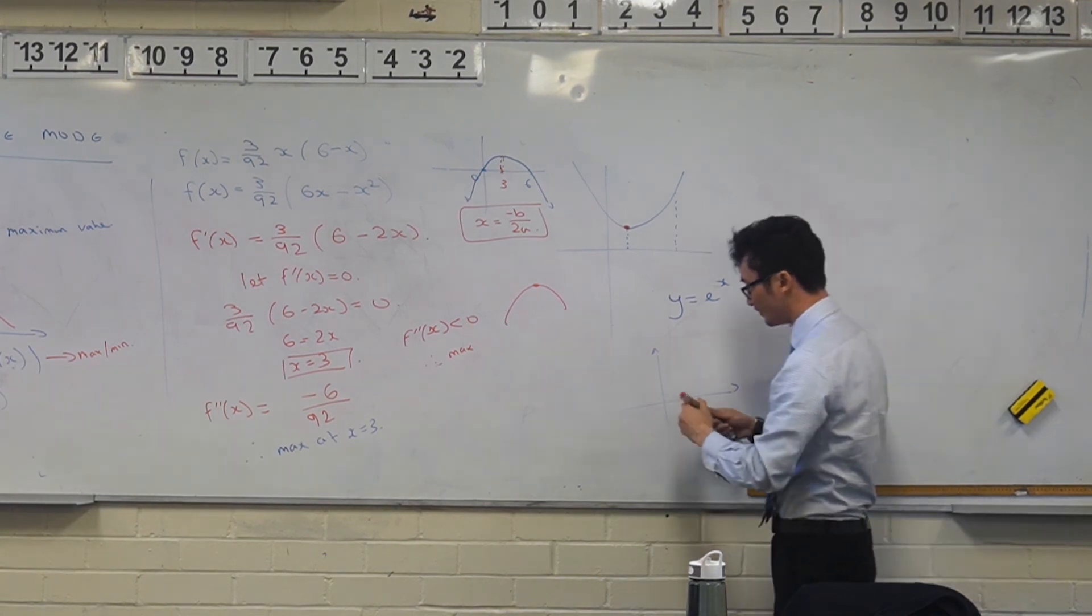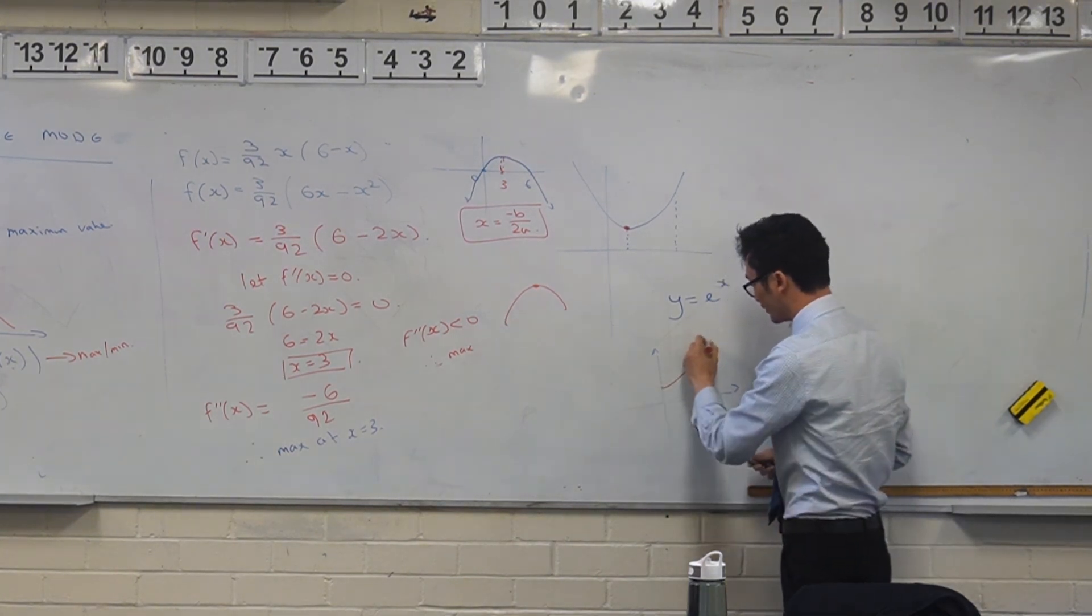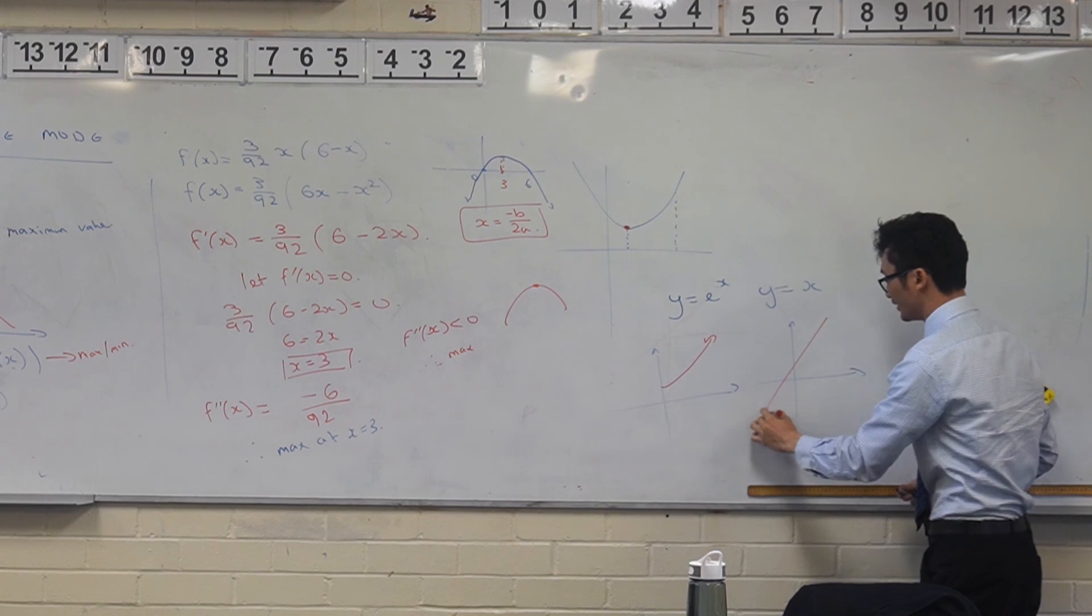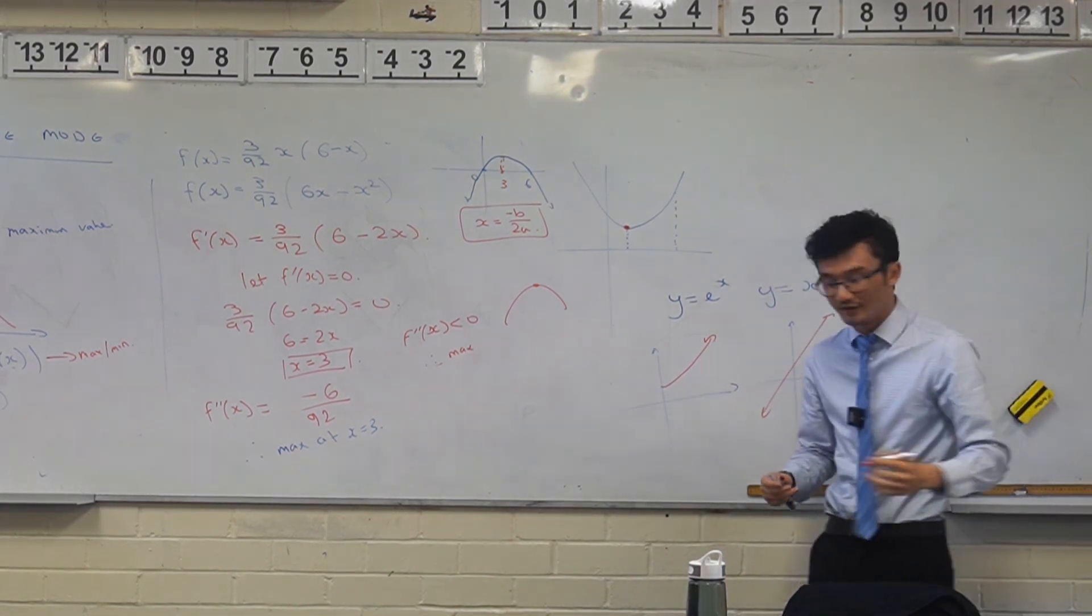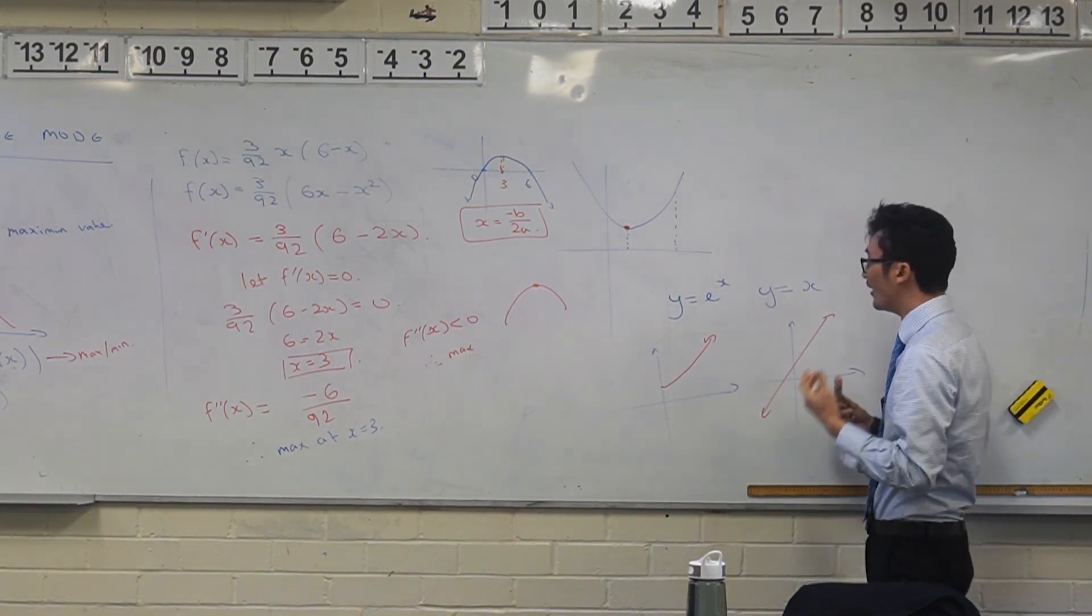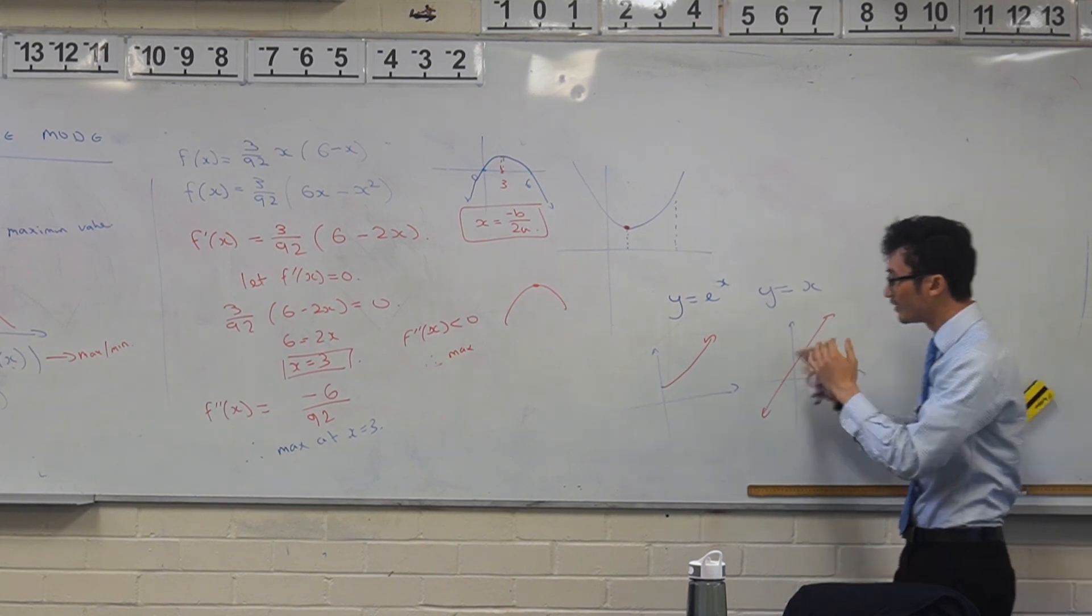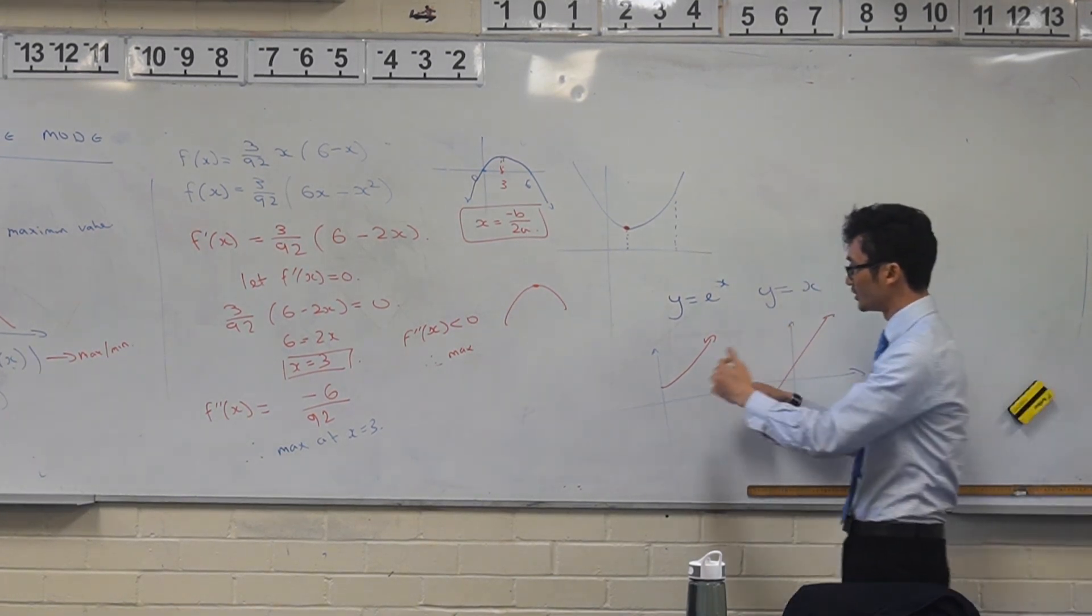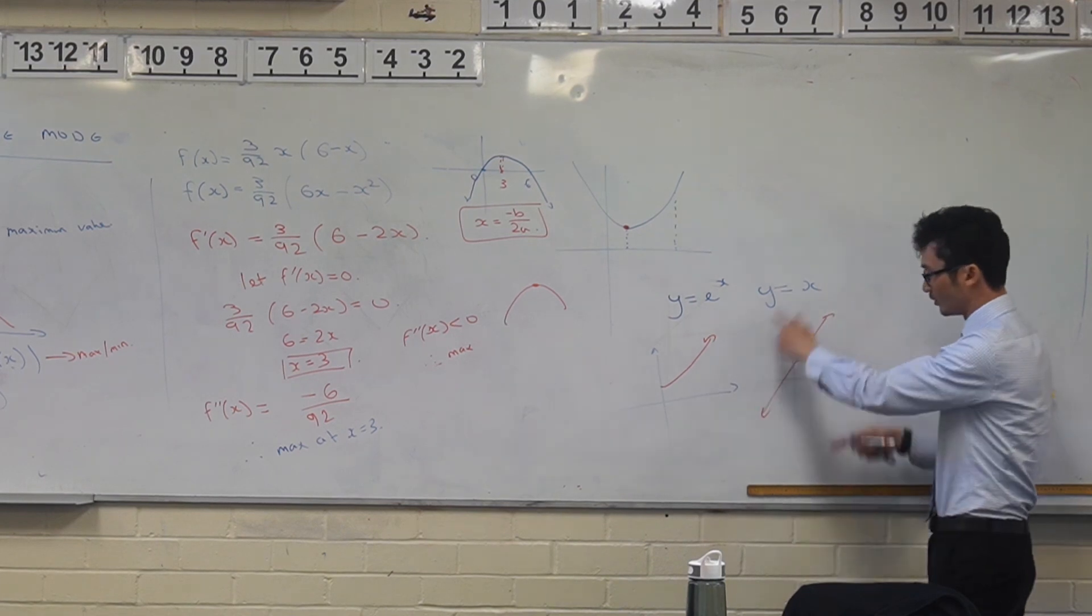Like if you get something like this, if you think about what it looks like, if you try and find the maximum minimum point, you're not going to get one, right? Because the idea is that these don't have any. So what you might want to think about is - think about the end points.